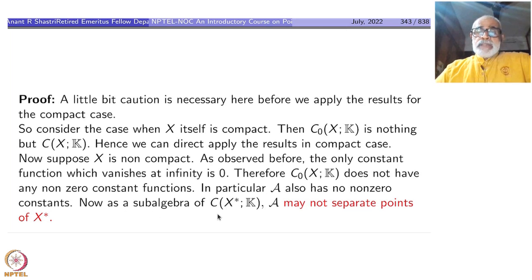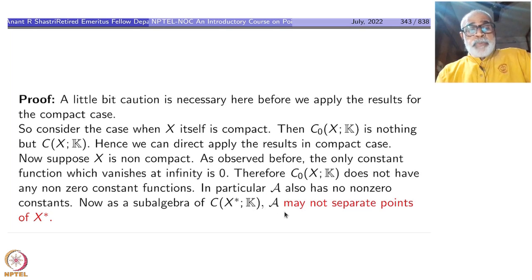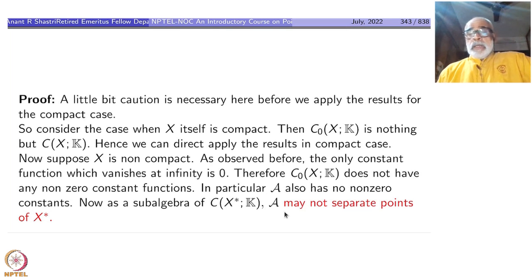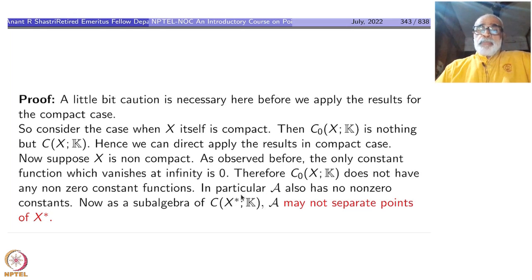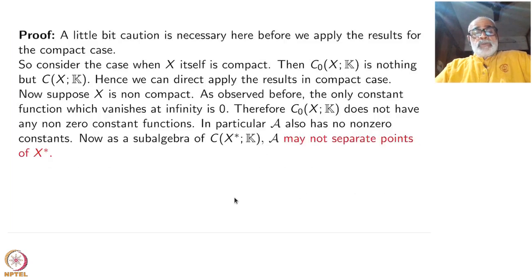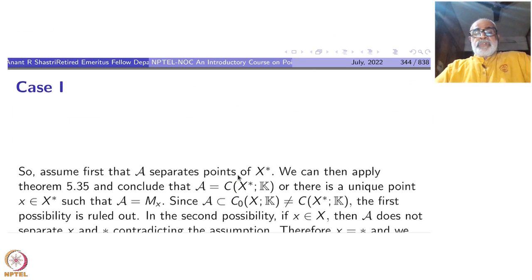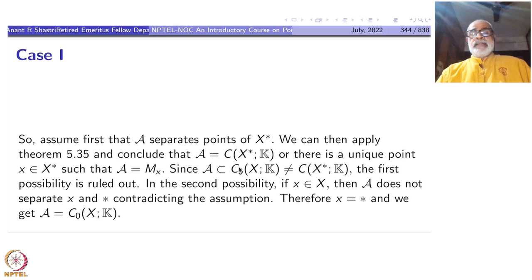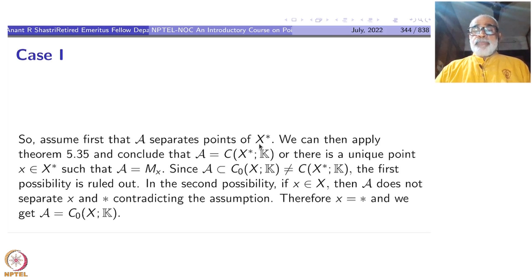As a subalgebra of C(X*,k), A may not separate points of X*. We have assumed A separates points of X, but when you pass to X* and think of A as a subalgebra, this may fail because there is an extra point. So we have to be careful and study these things case by case. Assume first that A separates points of X*.